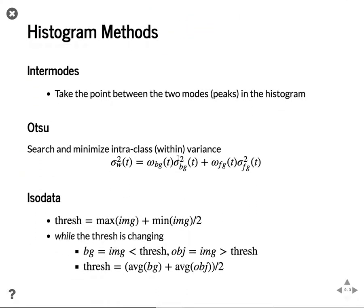When we look at the histogram methods in a bit more detail: inter-modes is simply taking the point between the two modes, so the two peaks in the histogram. OTSU searches and minimizes the intra-class, within-class variance — you come up with your foreground and background criteria and you want the standard deviation within the background and within the foreground to be as small as possible, picking a value so that values within those two groups are as close together as possible.